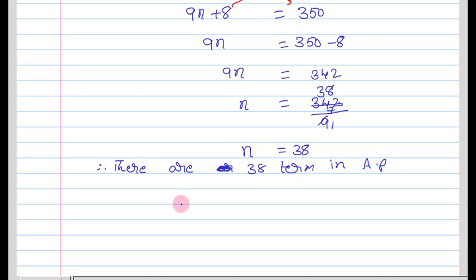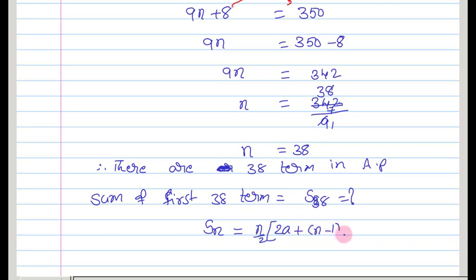Now what we have to find out? We need to find out the sum of them. That means sum of first n terms, s38, we have to find out. Here, to find out this, we need to apply another formula, sum of first n terms of AP, sn is equal to n by 2 of 2a plus n minus 1 into d.